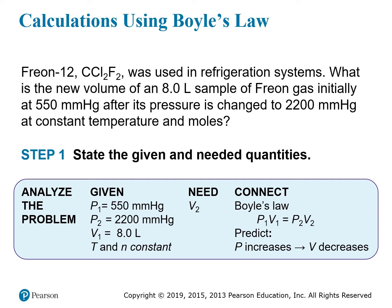To analyze the problem, we look at what we're given. We have an eight-liter sample of gas initially at 550 millimeters of mercury, so the initial pressure P1 is 550 mmHg and the corresponding volume V1 is eight liters. The pressure has changed to 2,200 millimeters of mercury, so P2 is 2,200 mmHg. We need to find the new volume V2. T and N being constant confirms we're using Boyle's Law.